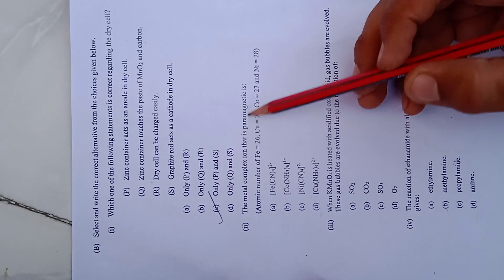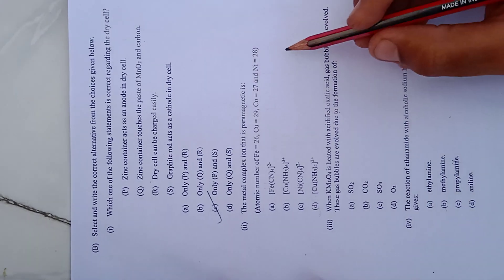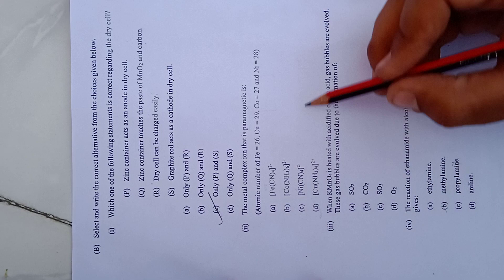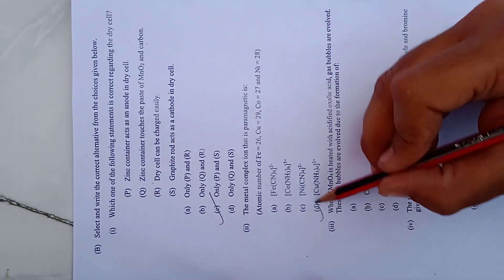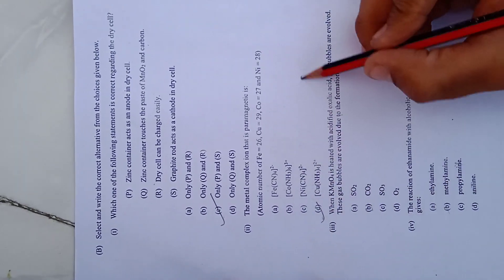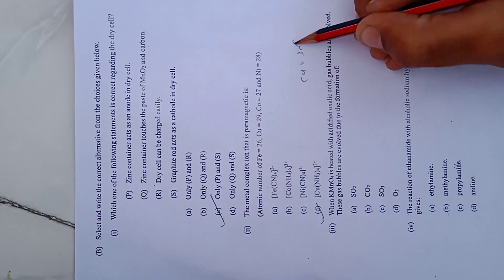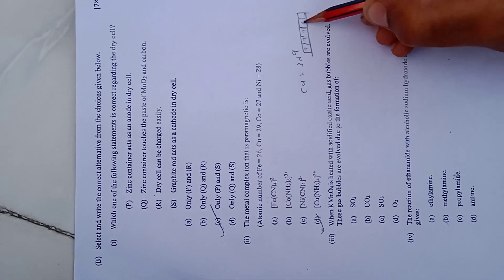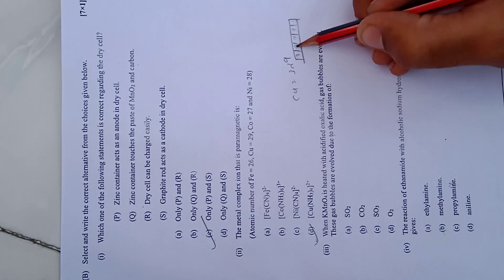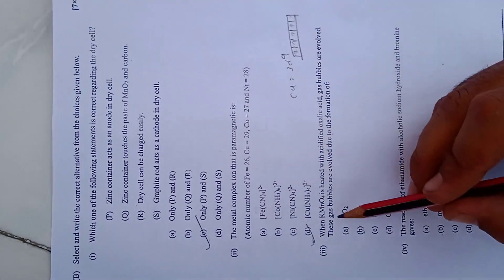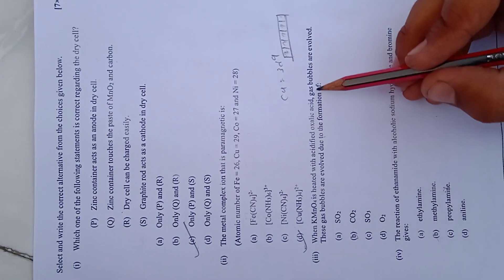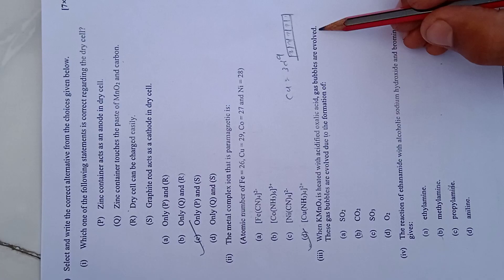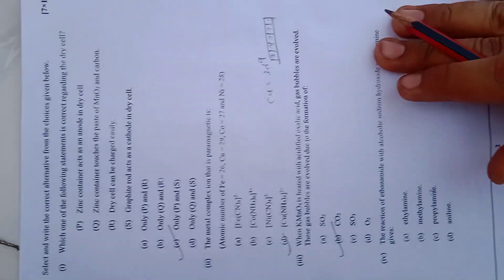Next: the metal complex cyan is paramagnetic. Here you draw the energy level diagram for the d orbitals. Copper is 3d9, and by filling electrons in proper sequence you find option D is the correct answer. When K2C2O4 is heated with acetyl, oxalic acid gas bubbles are evolved, so CO2 is the answer.